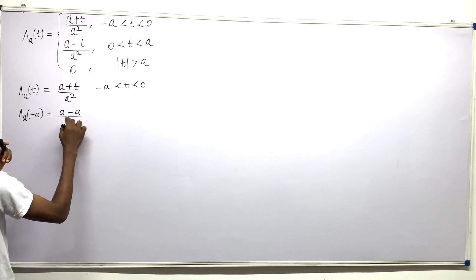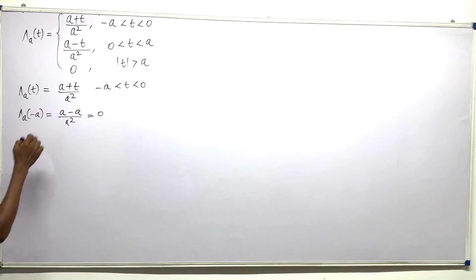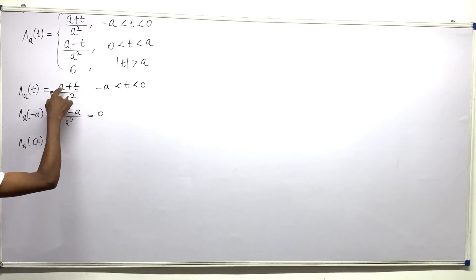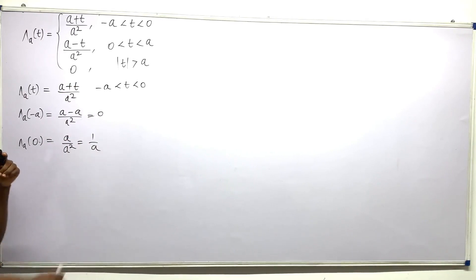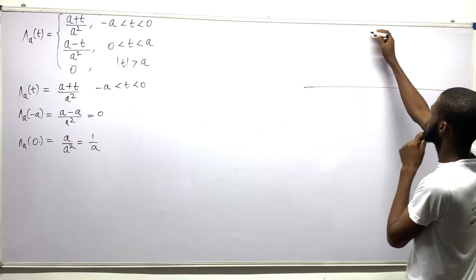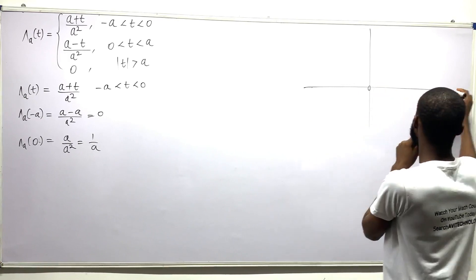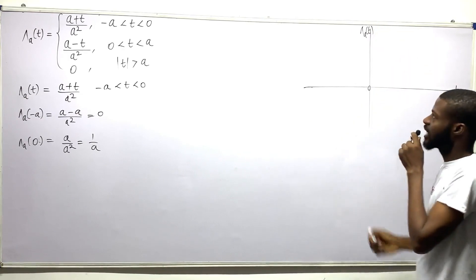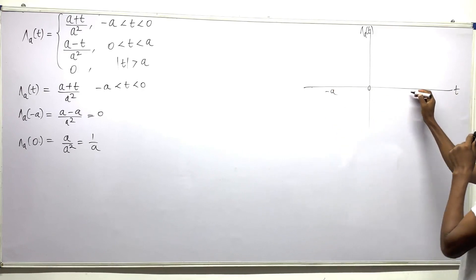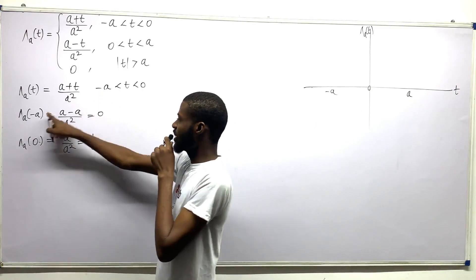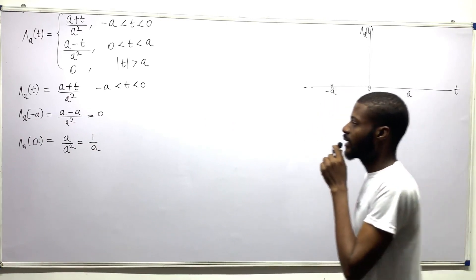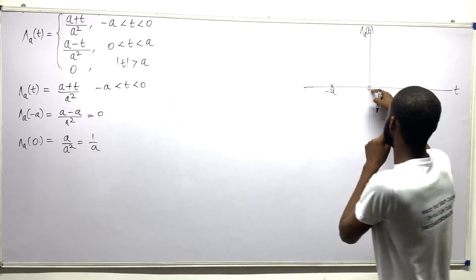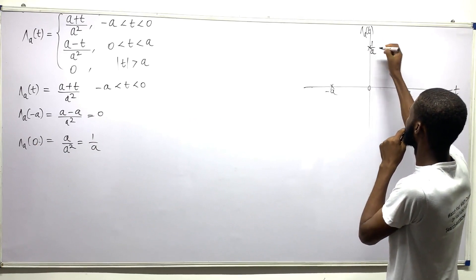Let us input minus a: (a + (−a)) divided by a squared gives zero. When t is zero: (a + 0) / a squared = a / a squared = 1/a. So let us graph this — the t-axis, with the triangular symbol. When it was at minus a we had zero as our result, and when it's at zero it's at 1/a.